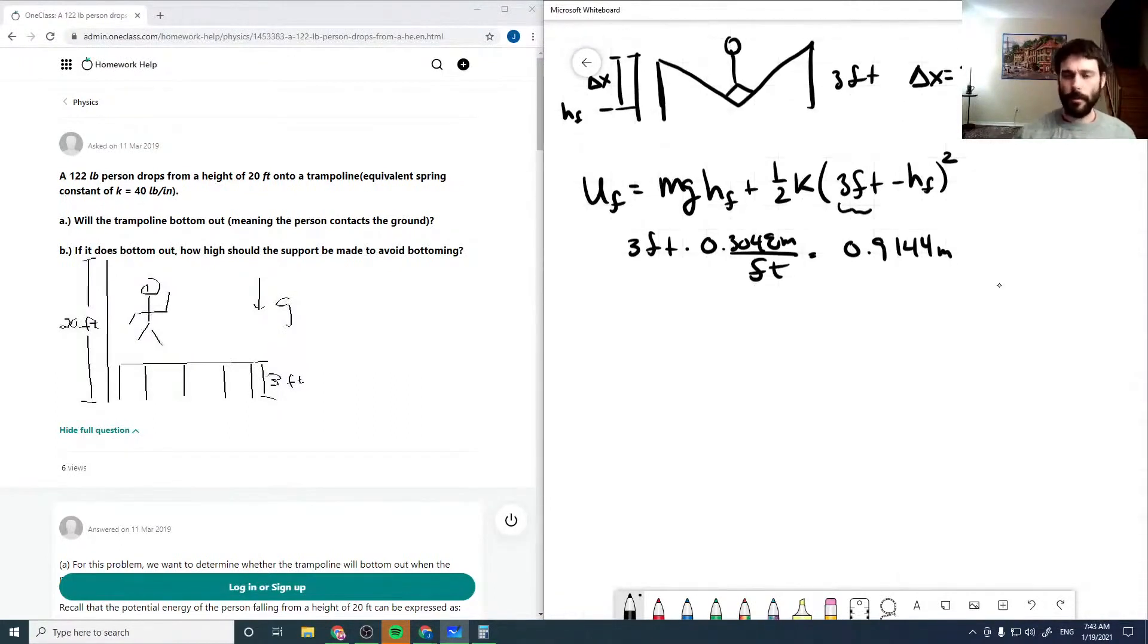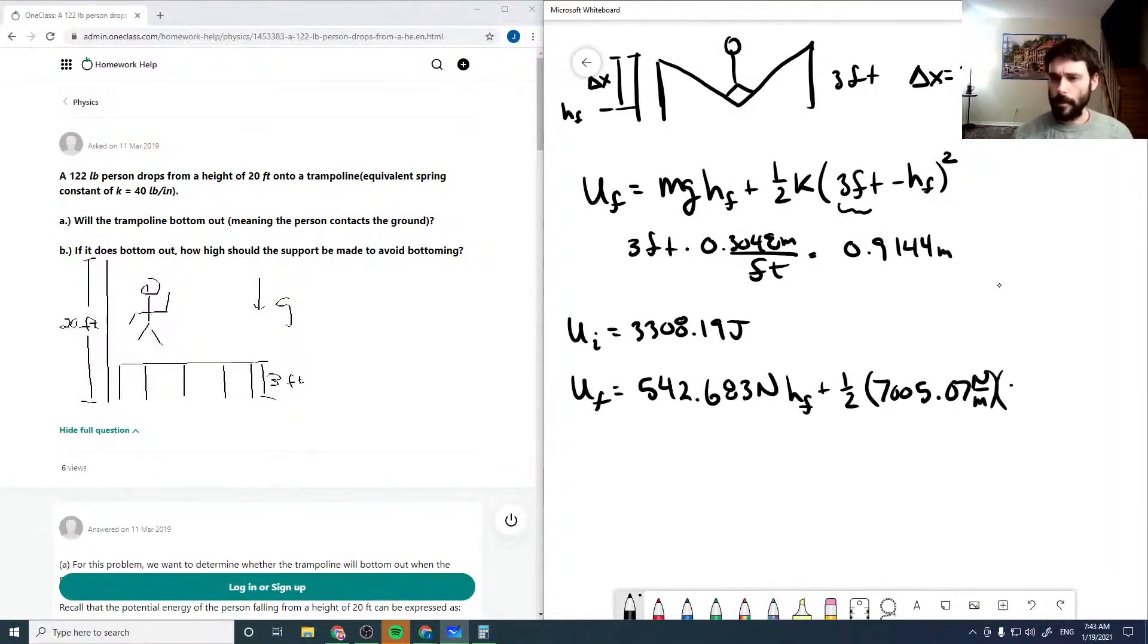Okay, so from our conservation of energy, we have that ui is 3308.19 joules, and our uf is our mg, which is 542.683 newtons times our final height, plus our one half of our k, which we solved for 7,005.07 newtons per meter, times our 0.9144 meters minus our hf squared.